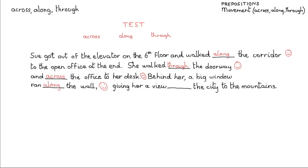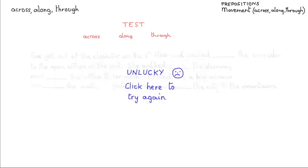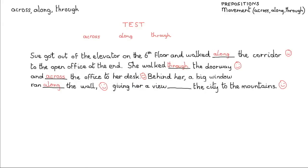And the last part of the paragraph: 'Giving her a view, the city to the mountains.' Think about that and make your choice. The answer is: across — giving her a view across the city to the mountains. And you have finished.